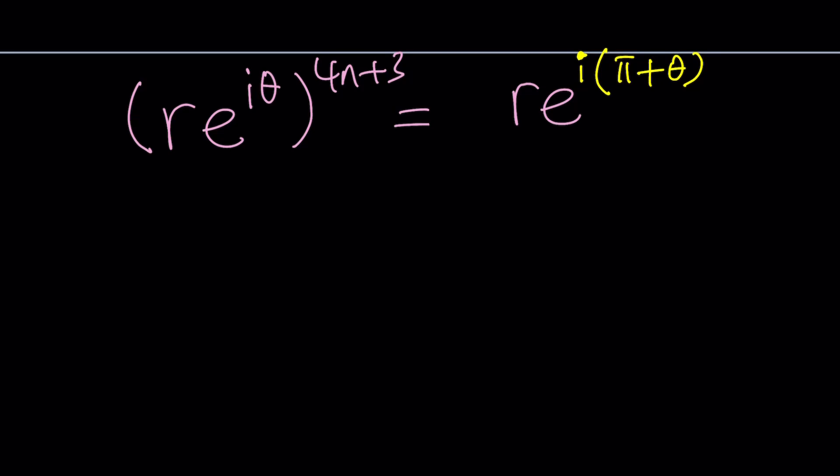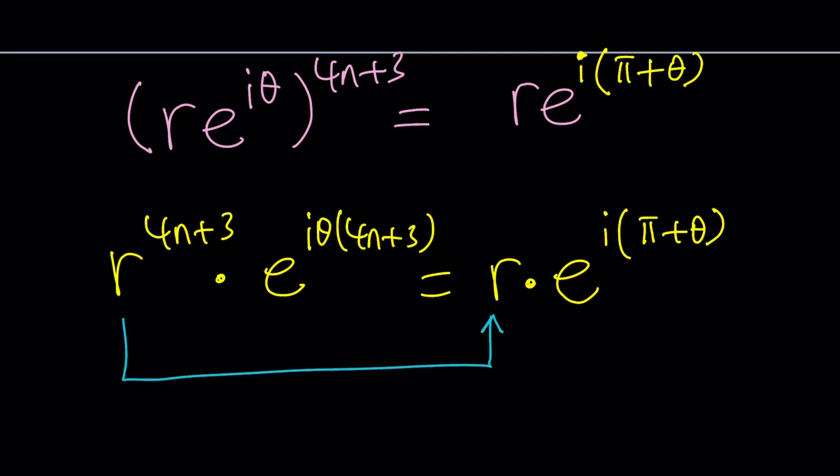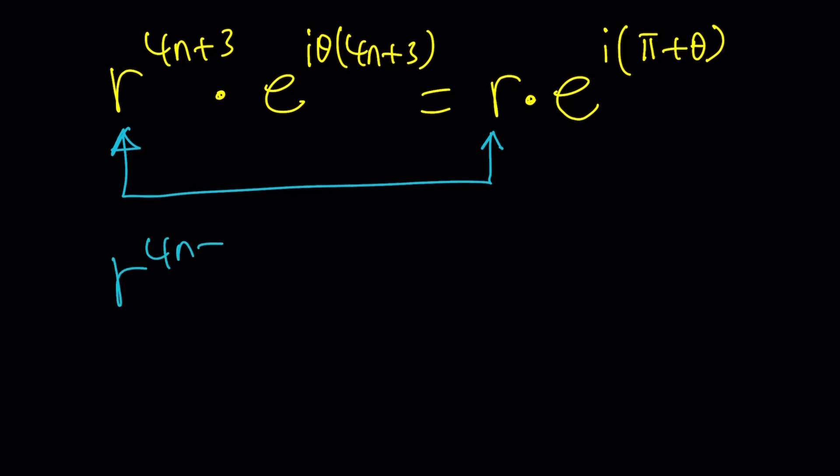Now let's go ahead and raise r to the power 4n plus 3. Remember n is an integer so r to the power 4n plus 3 is a real number. And then here we're going to have e to the power i theta multiply by 4n plus 3. And on the right hand side we're going to have r times e to the power i times pi plus theta. Now comparing these two numbers they are equal to each other. So we're going to set the absolute values equal to each other. r to the power 4n plus 3 equals r. As you know r can be 0 but we already talked about it. What if r does not equal 0 then we're going to have r to the power 4n plus 2 equals 1. And then from here hopefully you get r equals 1.